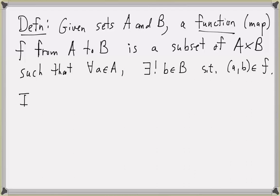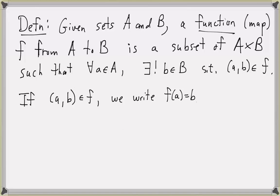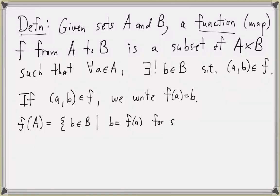Some other notation: if the ordered pair (a, b) is in function F, we write F of a equals b. We can also talk about the function evaluated at a whole set, so the notation F of set A represents all of the elements b in set B such that b equals F of a for some element a in A. This is often called the image of F, or the range of F.